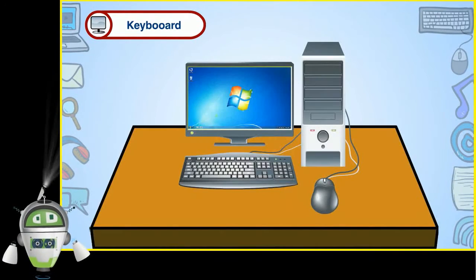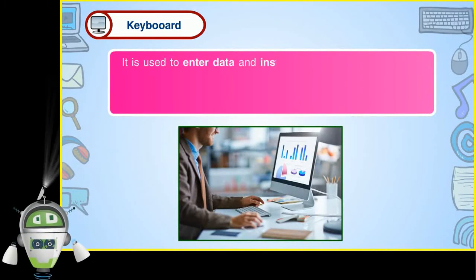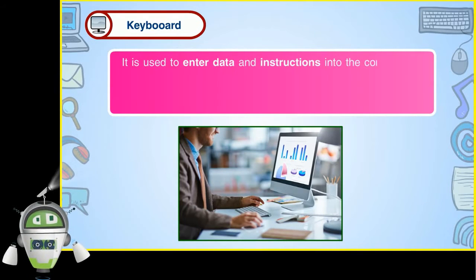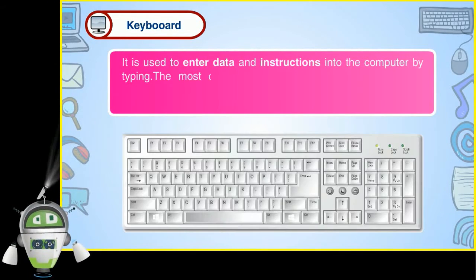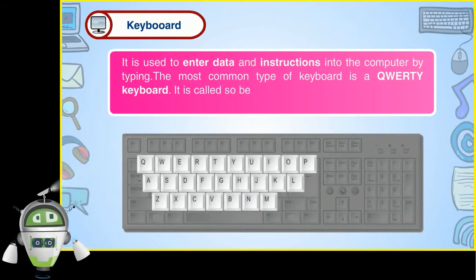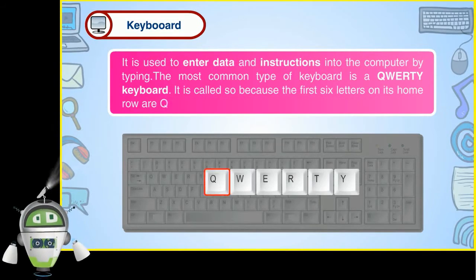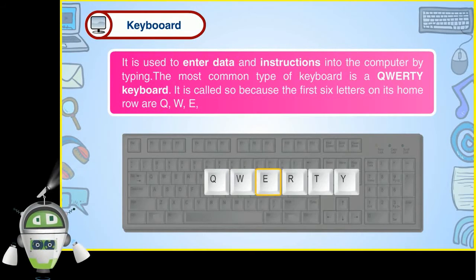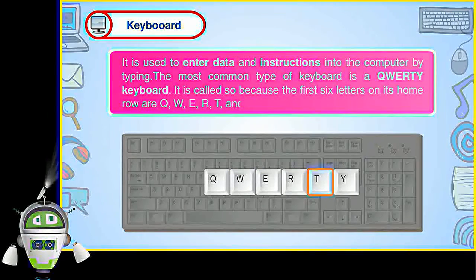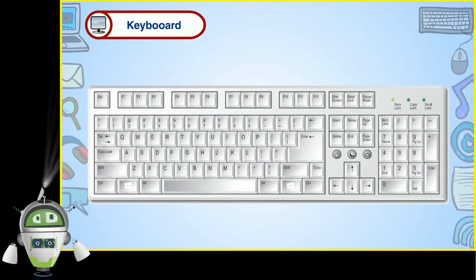Keyboard: The most common and popular input device is a keyboard. It is used to enter data and instructions into the computer by typing. The most common type of keyboard is a QWERTY keyboard. It is called so because the first six letters on its home row are Q, W, E, R, T and Y. The keys on the keyboard can be divided into four parts.